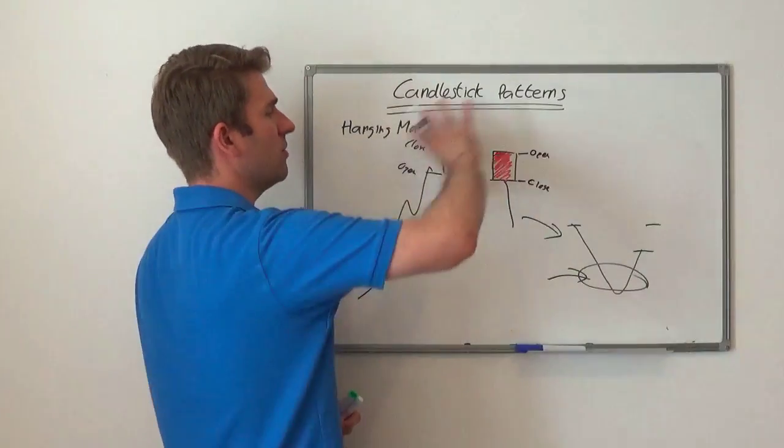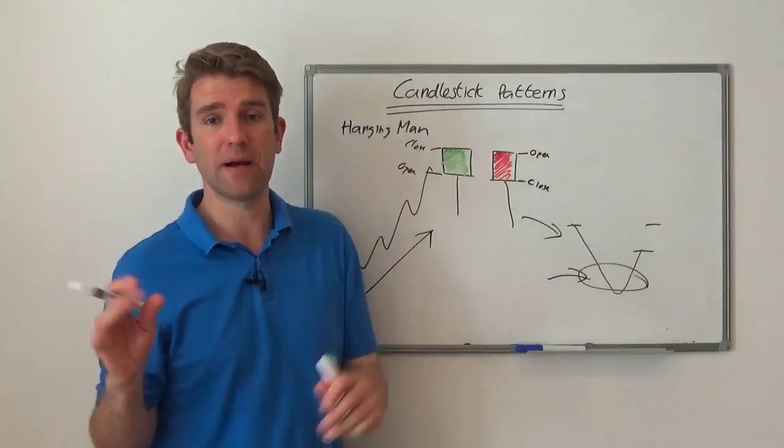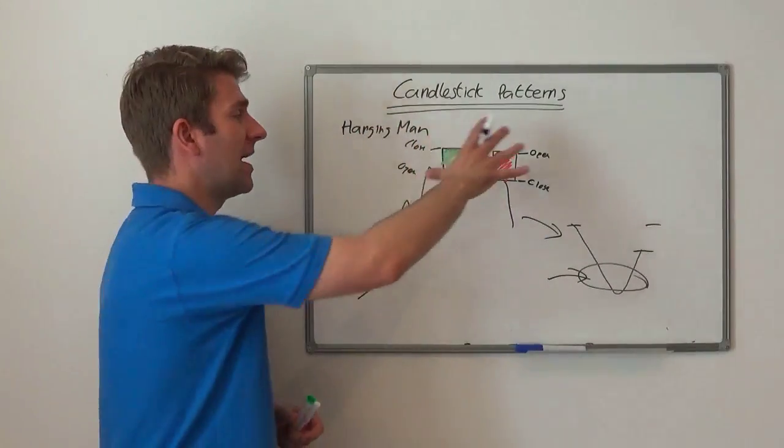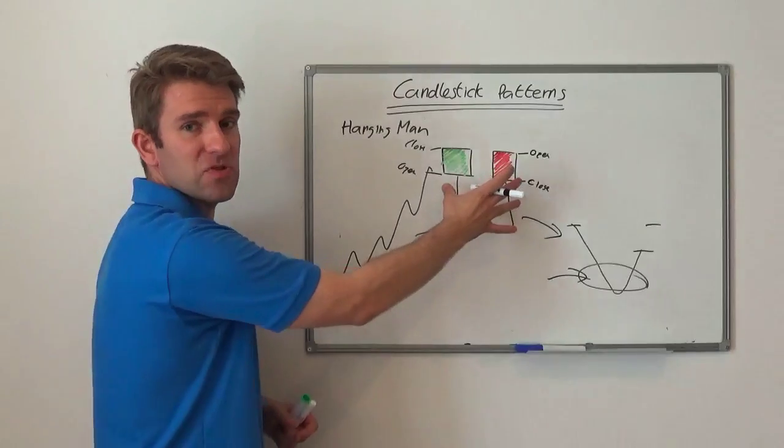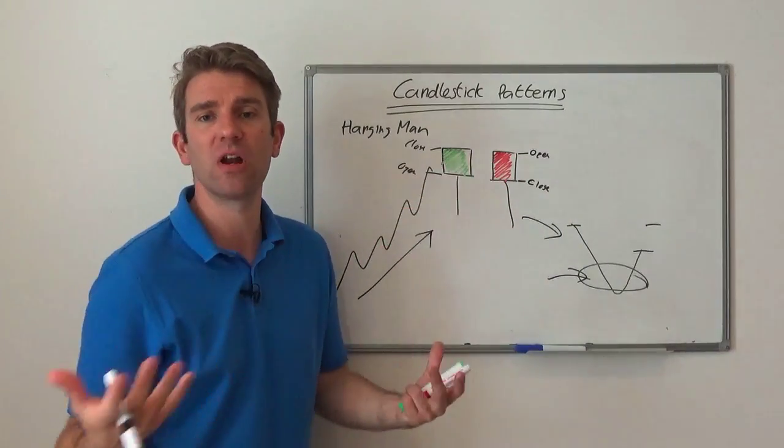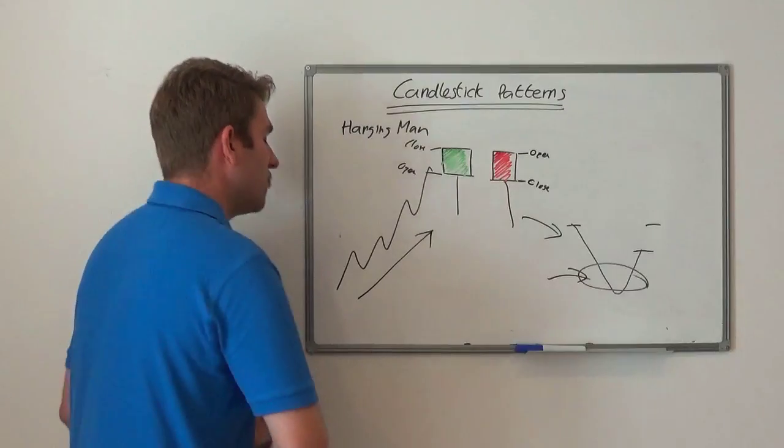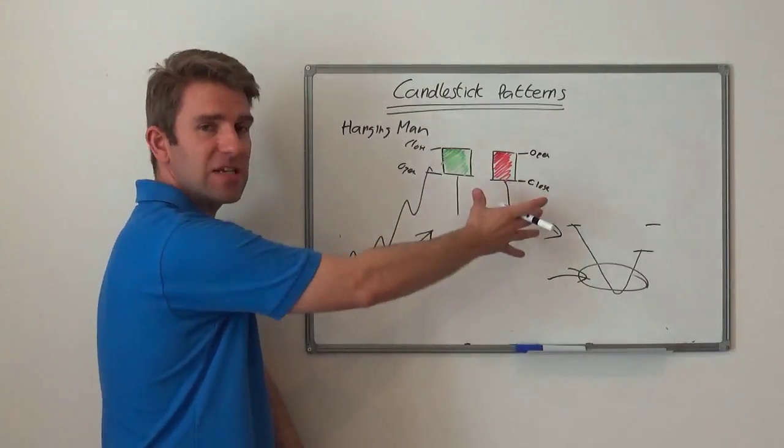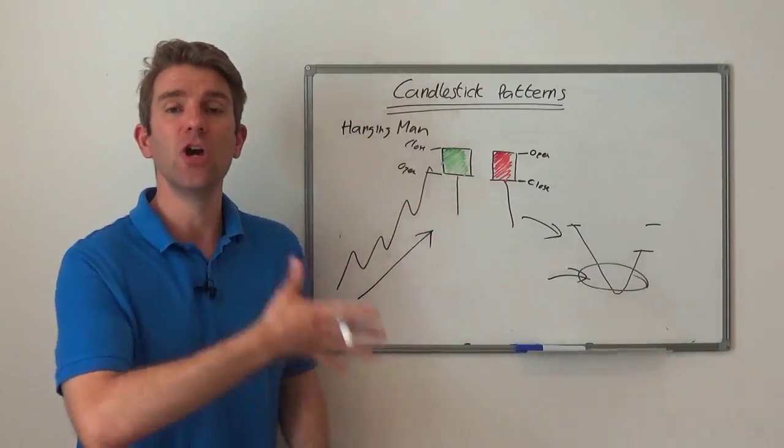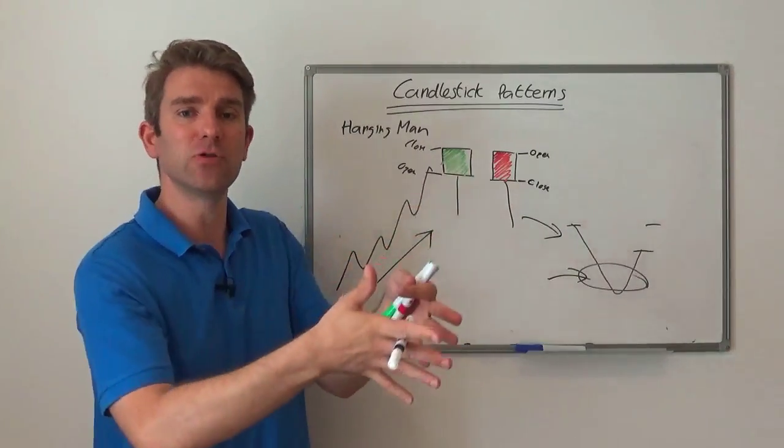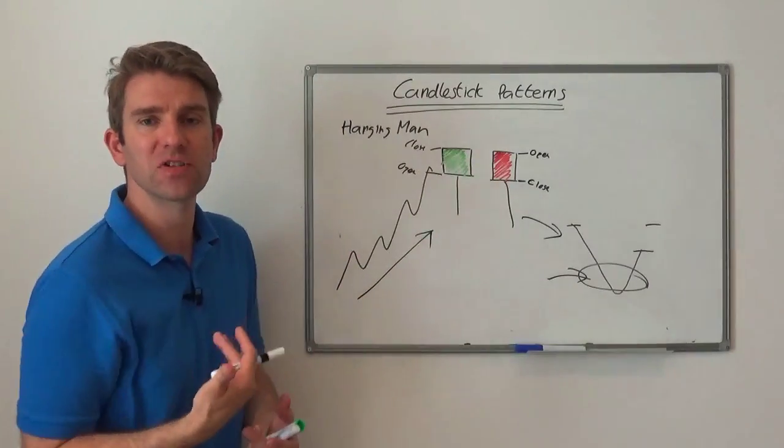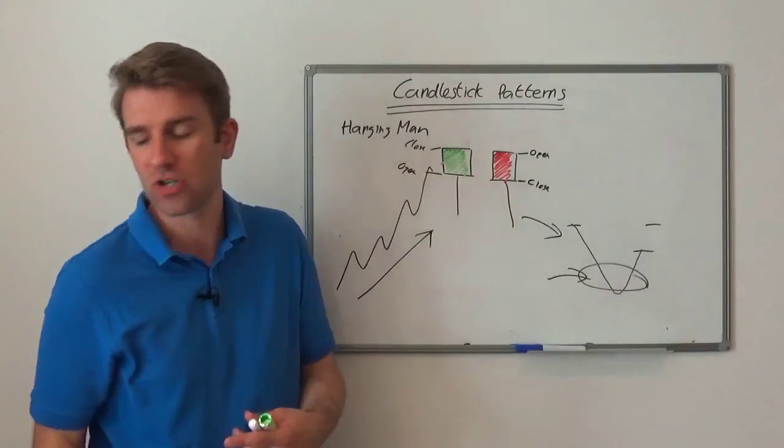The idea is that you're selling - it's a bearish pattern after you've had an uptrend. With all these patterns, what happens before is just as important as this pattern here. That candlestick positioned anywhere in a range is completely meaningless. If you're in a strong uptrend and you start to see that, maybe you can start to position for the short side, lean on the short side, unwind your long positions, scale out of something, or start scaling into your short.